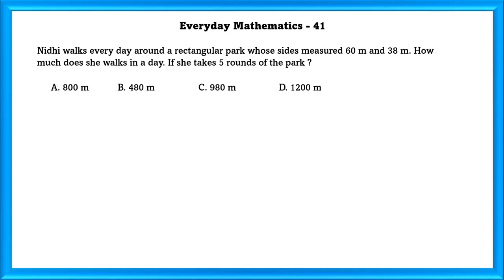Everyday Mathematics Question Number 41: Nithi walks everyday around a rectangular park whose sides measure 60 meters and 38 meters. How much does she walk in a day if she takes 5 rounds around the park?